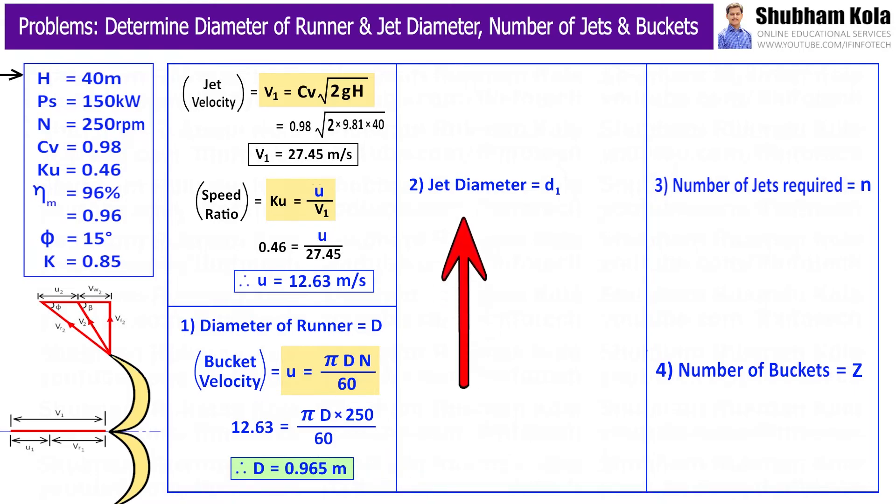Next, we want to determine diameter of jets. To get this value, I will use discharge formula Q = area of jet × velocity of jet V1, where area of jet is π/4 d² and d is the diameter of jet.